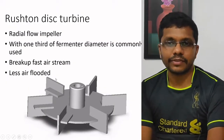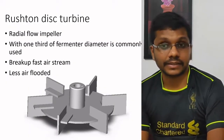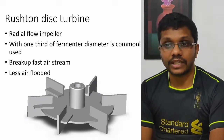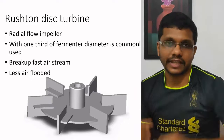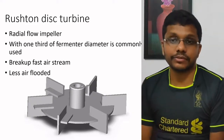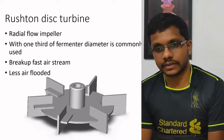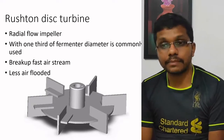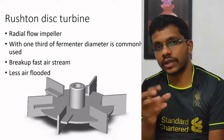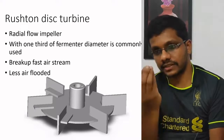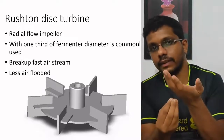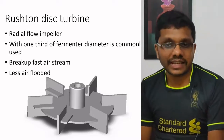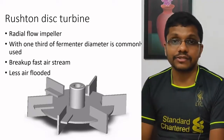One special impeller type is the Rushton turbine — a radial flow impeller with a diameter one-third of the fermenter diameter, which is commonly used. It is specialized in breaking up the air stream very rapidly, dispersing large air bubbles introduced just below the impeller into small bubbles, minimizing the chance of air flooding.